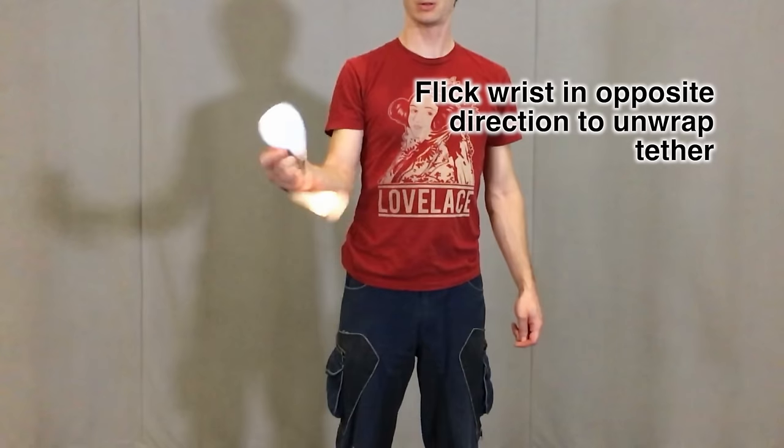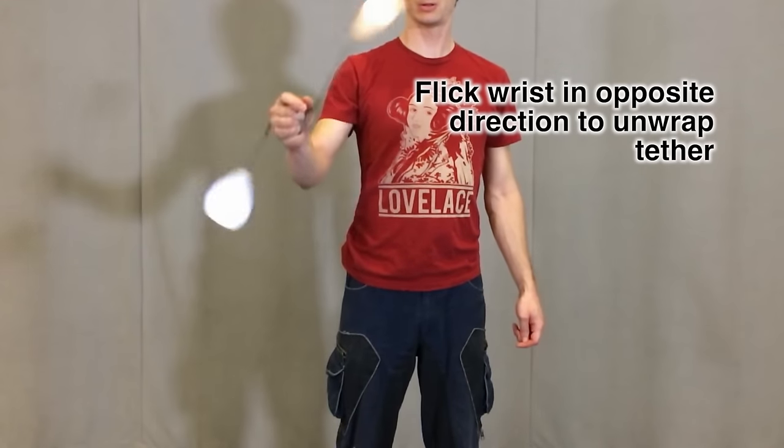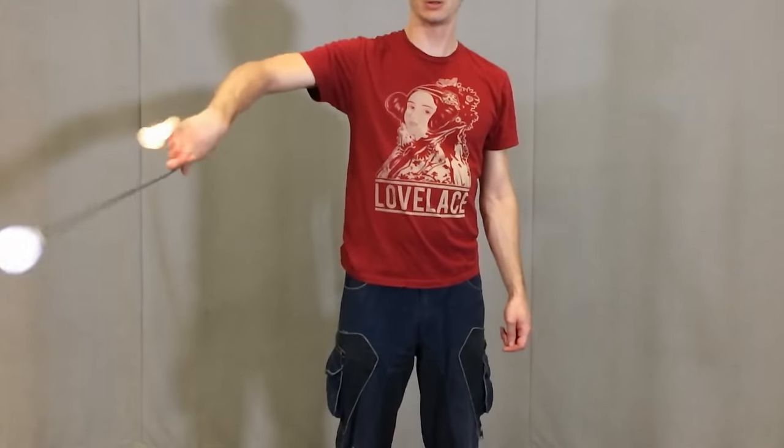Once the tethers are wrapped around your hand, you'll need to lightly flick your hand around in the opposite direction that the poi were just turning in. This will start the head and handle unwrapping.